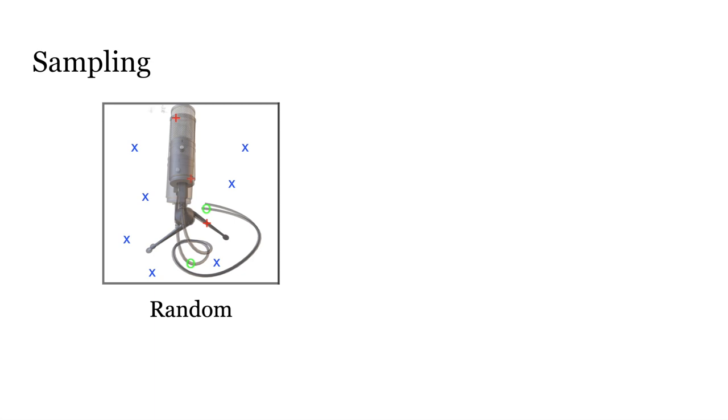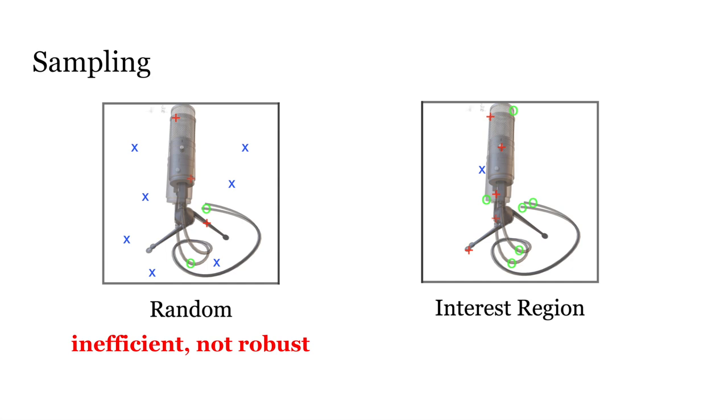For NeRF, rendering a pixel requires multiple evaluations of the neural network. Therefore, it is slow for iNeRF to back-propagate the loss from all the pixels. However, sampling pixels randomly isn't efficient.